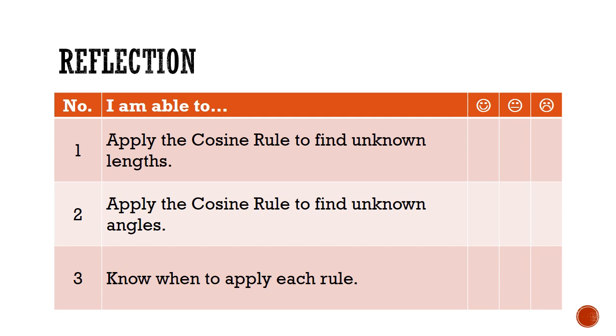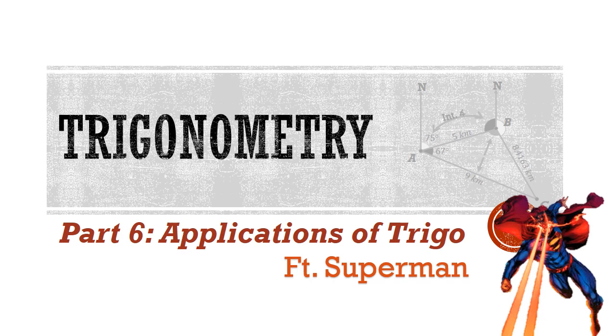And now is the time to reflect on the success criteria that we have set at the start of this lesson. Are you now able to apply the cosine rule to find the unknown lengths and unknown angles of given triangles? And are you now clearer about how to and when to apply each rule? We have come to the end of part 5 on the cosine rule. Stay tuned for part 6 where we will look at some applications of trigonometry, mainly the angles of elevation and depression as well as bearings. Until then, thank you and have a great day of learning.